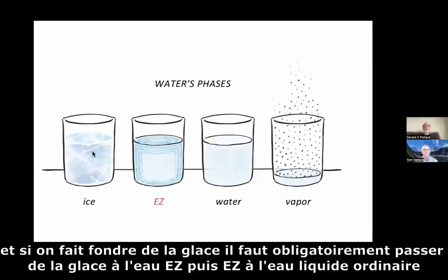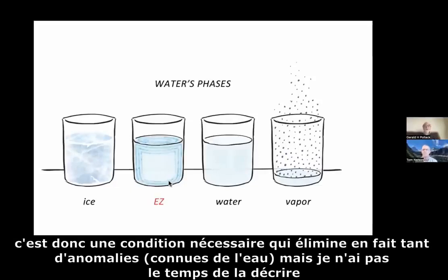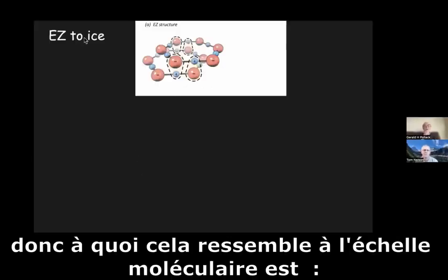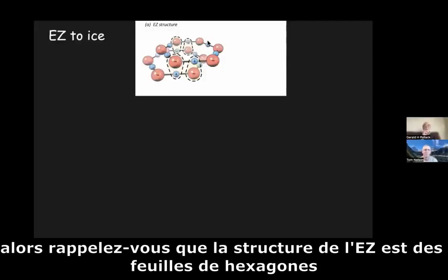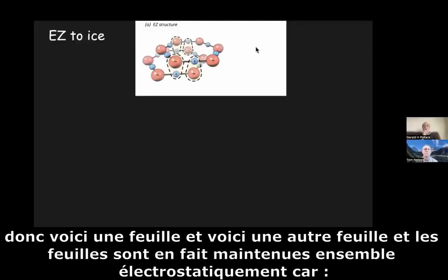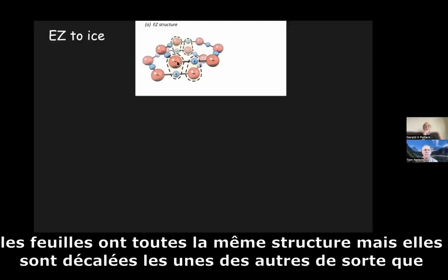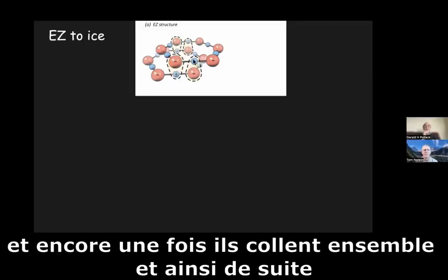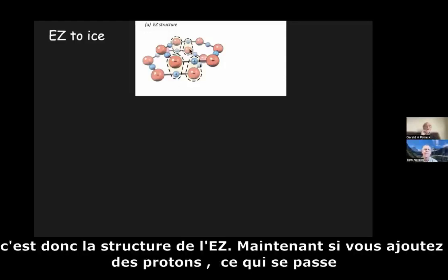And if you melt ice, it's obligatory to go from ice to EZ water in order to get to ordinary liquid water. So this is a necessary condition, which actually clears up so many anomalies. The EZ structure has these sheets of hexagons — here's one sheet and here's another sheet. The sheets are held together electrostatically because they're shifted from one another so that on one sheet, the positive charge matches up with the negative. You might have oxygen here and hydrogen here, and they stick together. That's the EZ structure.